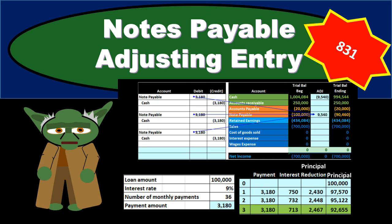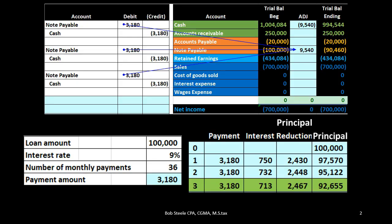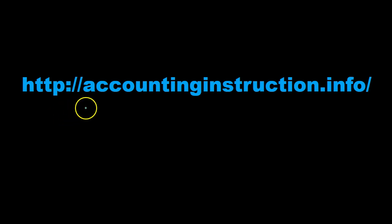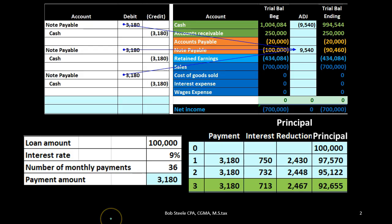In this presentation, we will take a look at adjusting entries related to notes payable. Remember what adjusting entries are as compared to just normal day-to-day journal entries. Adjusting entries happen at the end of a time period — either the month or year — and we make a planned adjustment in order to make the financial statements correct on an accrual basis.